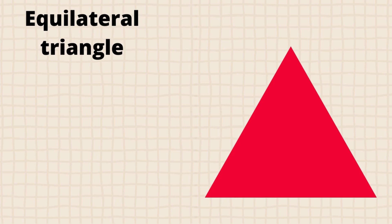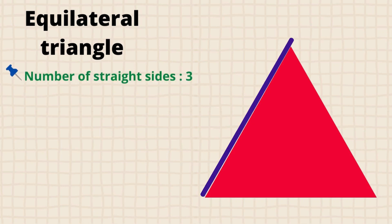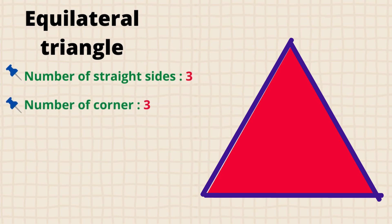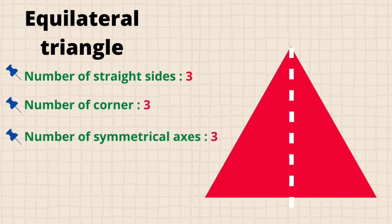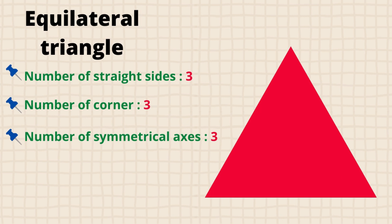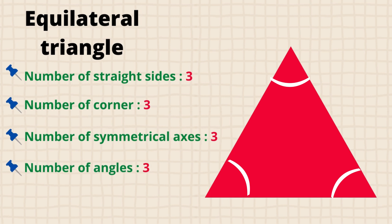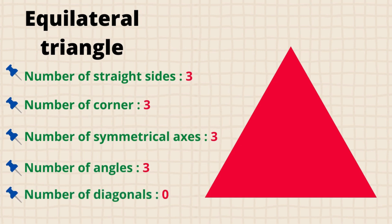Now let's see the characteristics of polygons. The first polygon is the equilateral triangle. It has three straight sides, three corners, three symmetrical axes, three angles, and an equilateral triangle has no diagonal.